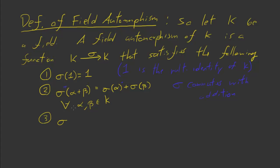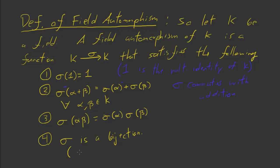The third property is the analogous fact for multiplication: σ(α · β) = σ(α) · σ(β), which is just saying that sigma commutes with multiplication. If you put these three properties together, you are saying that sigma is a ring homomorphism.